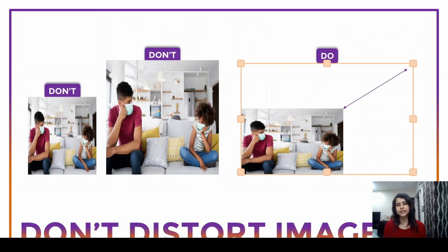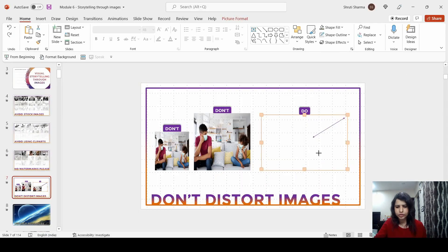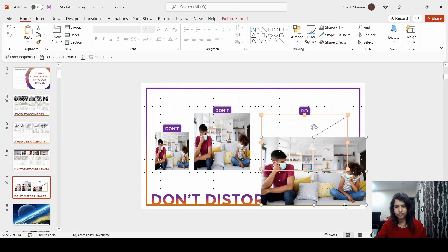Do not distort images. Whenever you have to use images and increase the size, please do not expand or distort them by stretching from the right, top, or bottom. Always increase the size using the corners, because then the size will increase in the proper ratio, which will not distort the image. Otherwise they will look either compressed or stretched — if I use an image like this or like this, it is going to look really bad. Always increase the size from the corners.